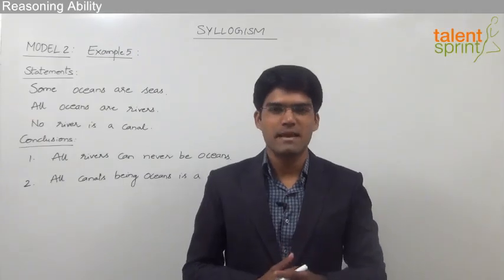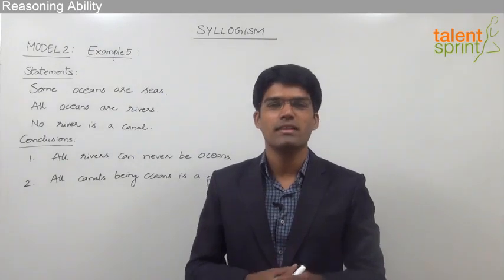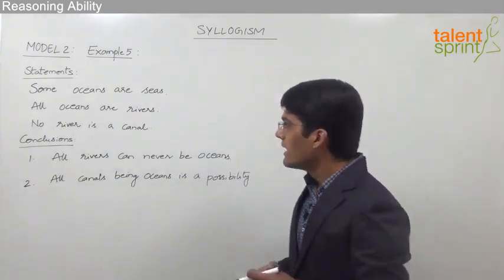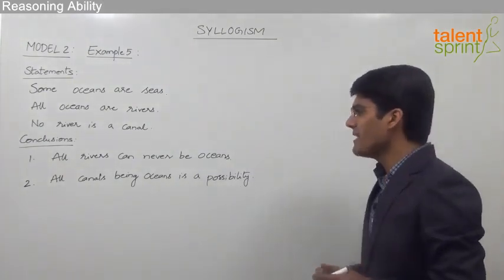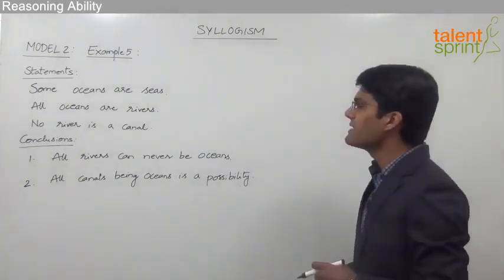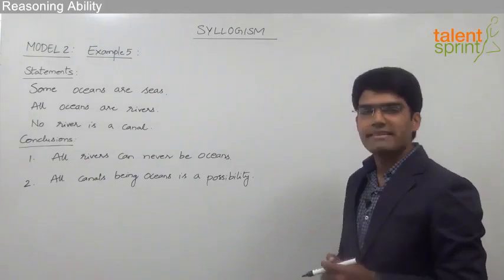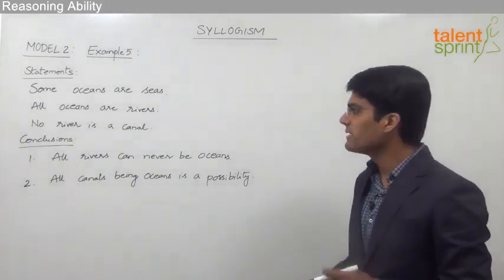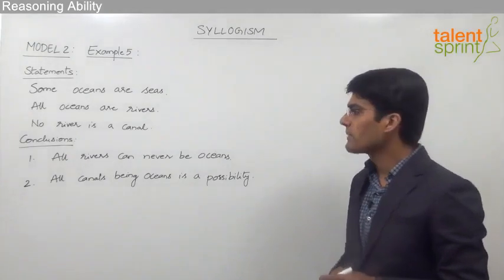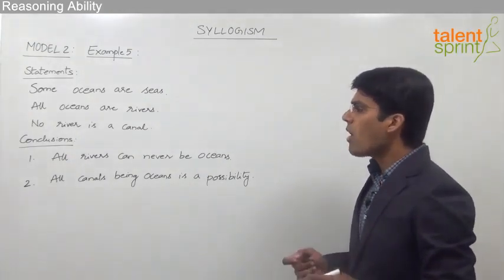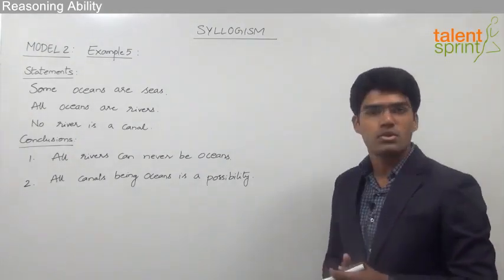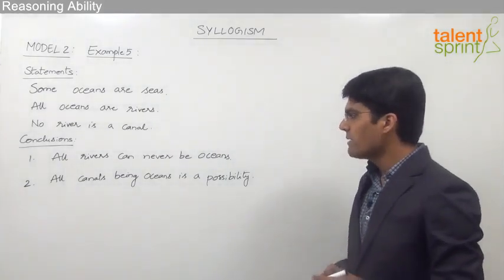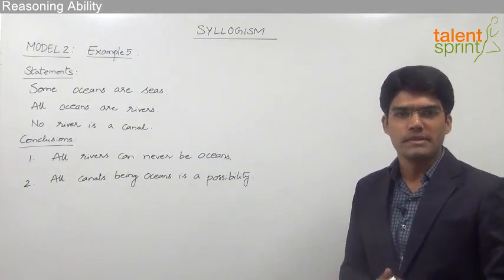Let us now discuss another example from the second model of syllogisms, which is based on various possibilities. As you can see, we have three statements and two conclusions. The given statements are: some oceans are seas, all oceans are rivers, and no river is a canal. The two conclusions are: all rivers can never be oceans, and all canals being oceans is a possibility.